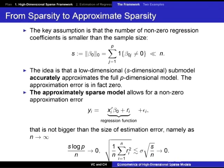The key assumption behind sparsity is that the number of non-zero regression coefficients in the model is much smaller than the sample size. The idea behind this assumption is that there is a low dimensional — s-dimensional to be precise — submodel that accurately approximates the full P-dimensional model. In fact, the approximation error is just zero.